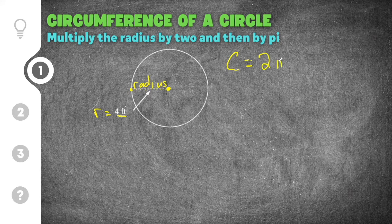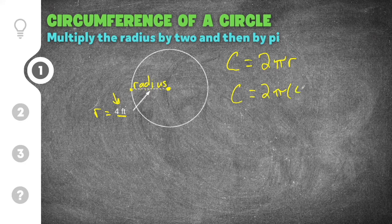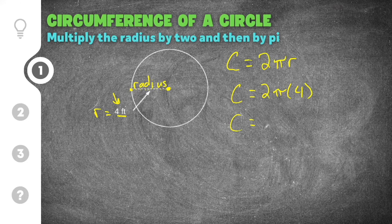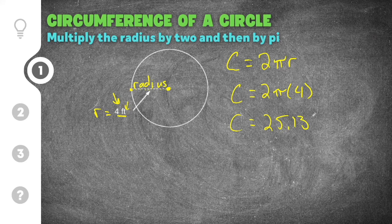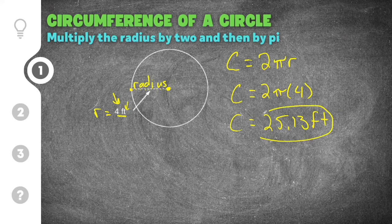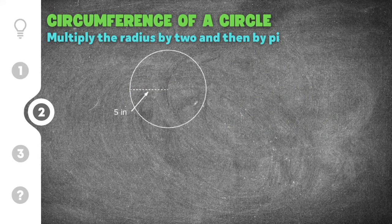To find the circumference we use our formula: circumference equals two times pi times r. The radius is four feet, so I replace r with four. I go to my calculator and put in two times pi times four, and I get 25.13. Our units are feet, so the circumference of the circle is equal to 25.13 feet.